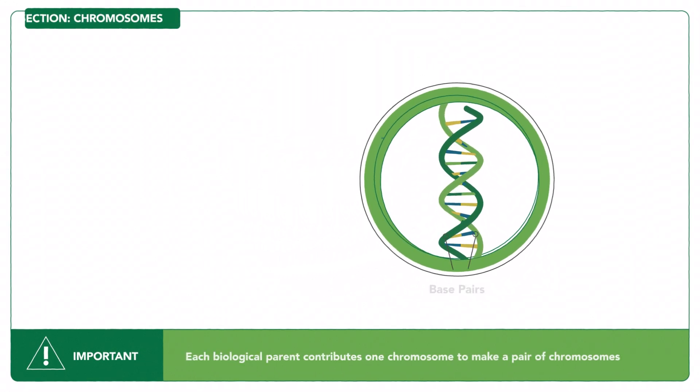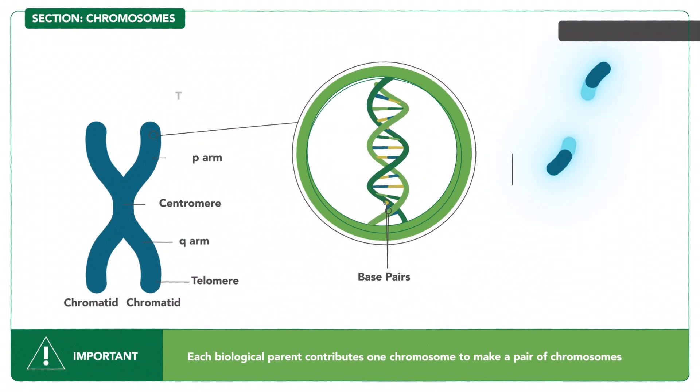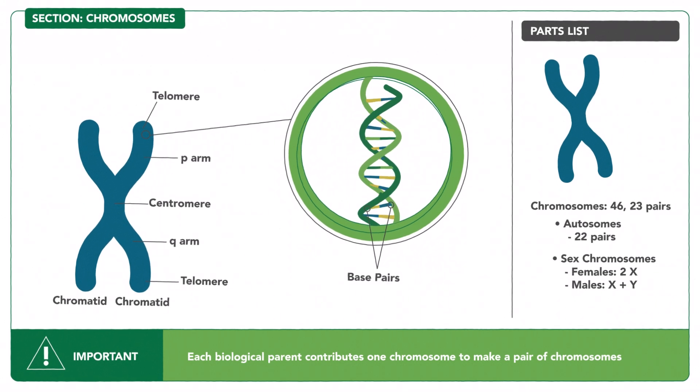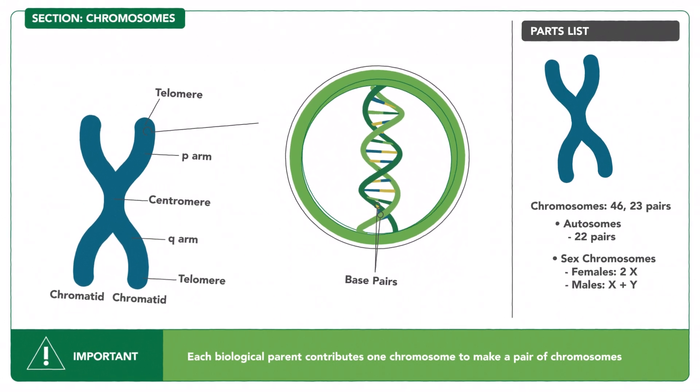Now, wind the DNA tightly into chromosomes. You'll have 46 chromosomes, grouped into 23 pairs. They are placed in the nuclei of our cells.